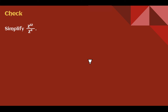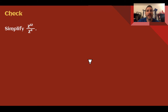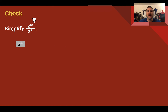Check your understanding: simplify the expression given. Pause the video now and complete the check. You should have got z to the eighth. Same base, dividing — subtract the exponents. 12 minus 4 is 8.